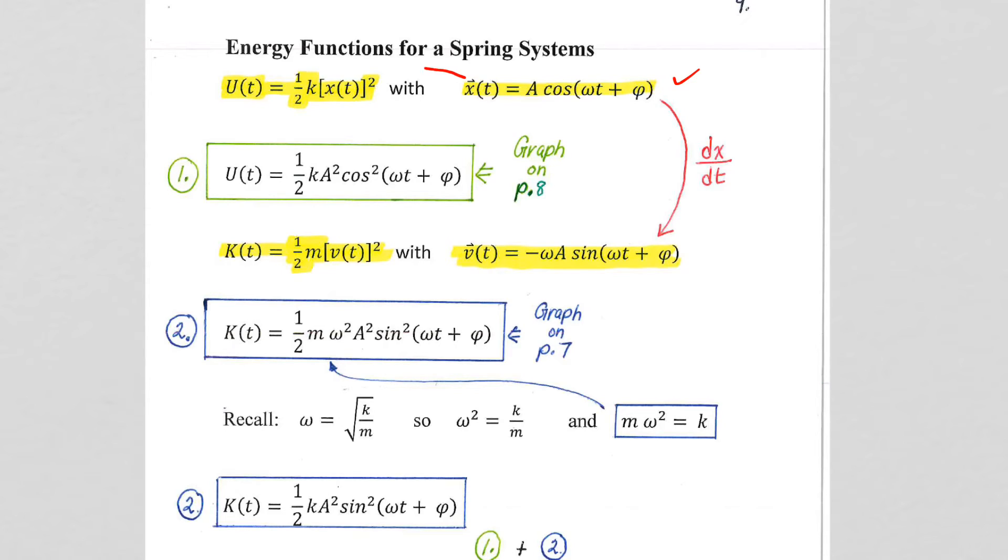Just substitute right in to get equation one. That's our potential energy function. Kinetic energy, we know, one-half mv squared. We could take the derivative of our cosine function, so dx dt gives us our velocity.